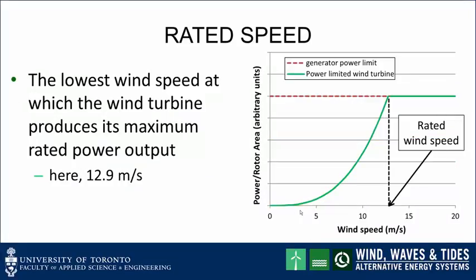Another important definition: the rated wind speed is the lowest wind speed at which the wind turbine produces its maximum rated power output. In this graphical example, the rated wind speed is 12.9 meters per second.